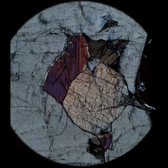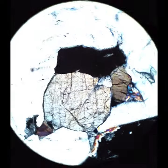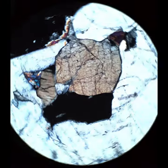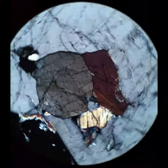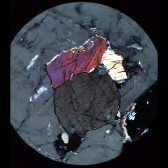And when I cross the polars, you'll see that end section has really low-interference colors. And the other grain has higher interference colors and that it becomes extinct when the cleavages are inclined with respect to the crosshairs.